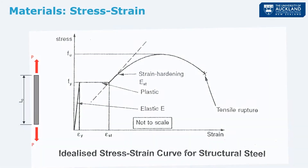The first thing I want to look at is the basic stress-strain behavior of the material. This will be a common image for many of you, but it's worth going over the specifics which relate to structural steel design. This is our idealized stress-strain curve, where strain — our elongation — is on the x-axis, and stress — force over area — is on the vertical axis. This is for a uniaxial tension test.